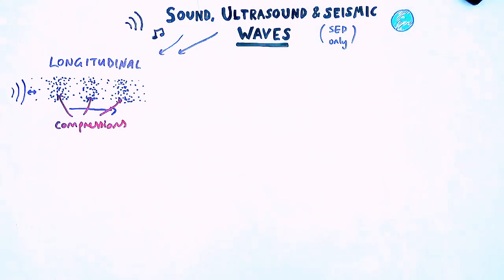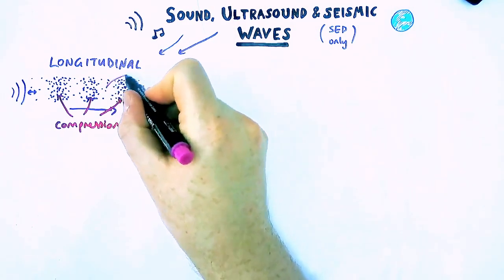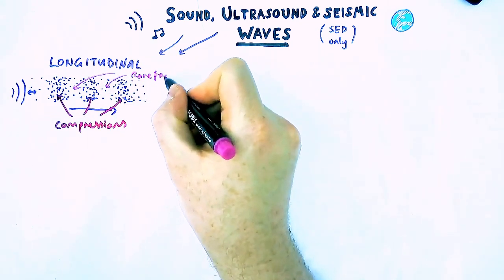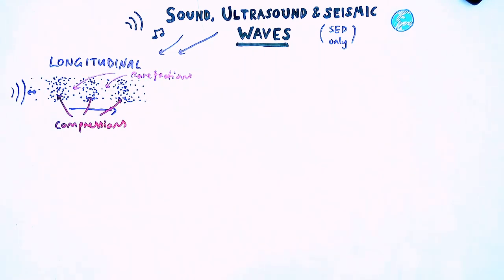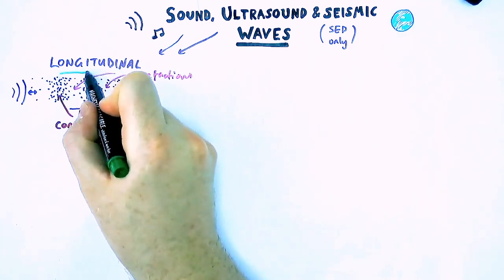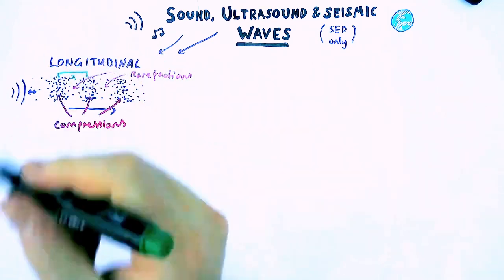Now in a longitudinal wave, in a sound wave, there are parts where the air particles are bunched up, which are called compressions, and there are parts where they are spread out, which is called a rarefaction. Not to be confused with refraction, they are annoyingly very similar, but a rarefaction where the particles are spread out.